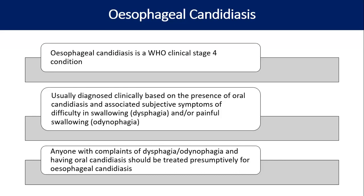Diagnosis is basically clinical and we empirically start antifungal, also looking for response to therapy. After seven days of initiation of antifungal, we review the case. If the response is adequate, we continue — meaning our diagnosis was correct retrospectively. The definitive diagnosis requires endoscopic visualization and histopathological demonstration of candida yeast forms in tissues, but these are hardly required. Confirmation can also be done by fungal culture and speciation, but not routinely needed.